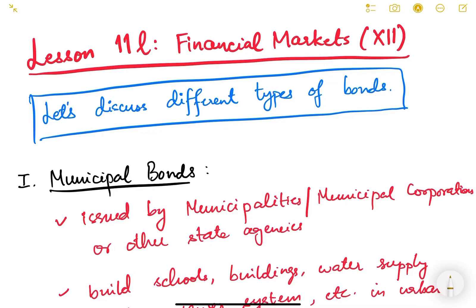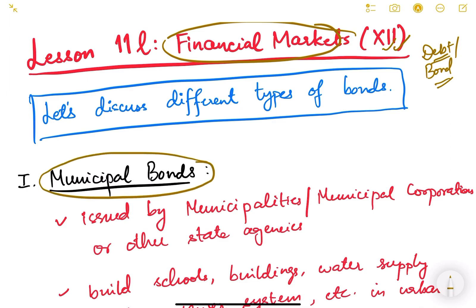Hello friends, let us continue discussing financial markets. This is the 12th video of this particular lesson and we have been discussing debt securities or bond markets in India from the last two to three videos. In this particular video we will discuss a few important types of bonds, specifically municipal bonds, and in the next video we will discuss other kinds of bonds.